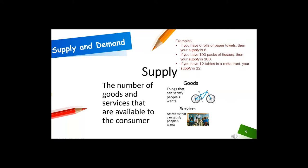If you have six rolls of paper towels, then your supply is six. If you have 100 packs of tissues, then your supply is 100. If you have 12 tables in a restaurant, your supply is 12.